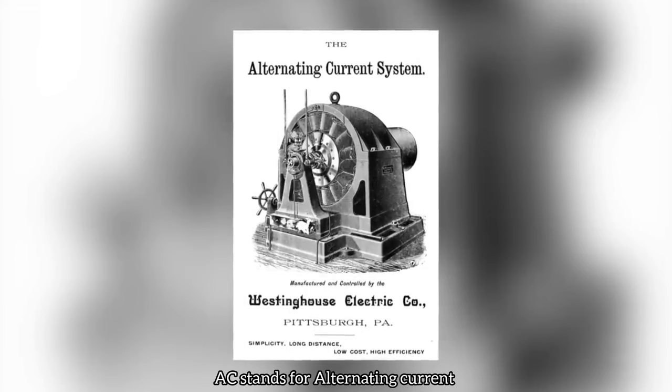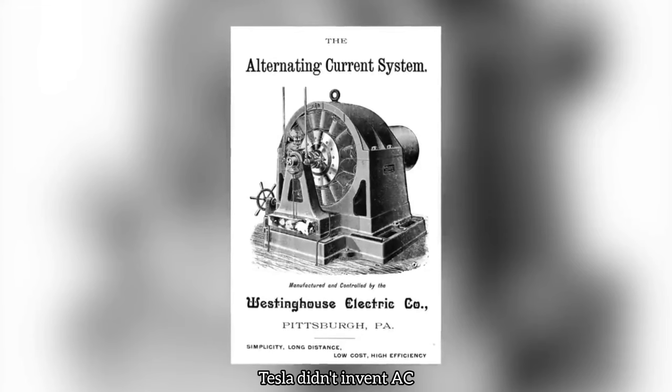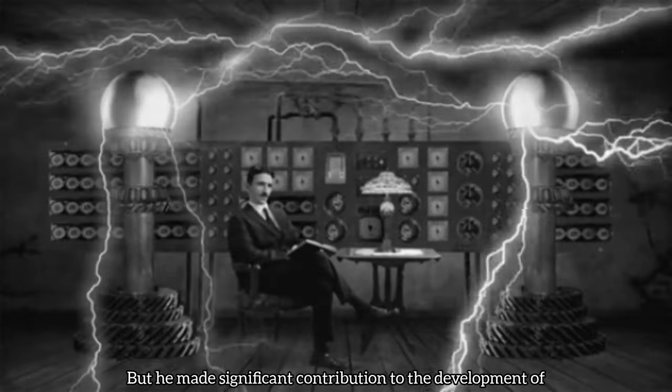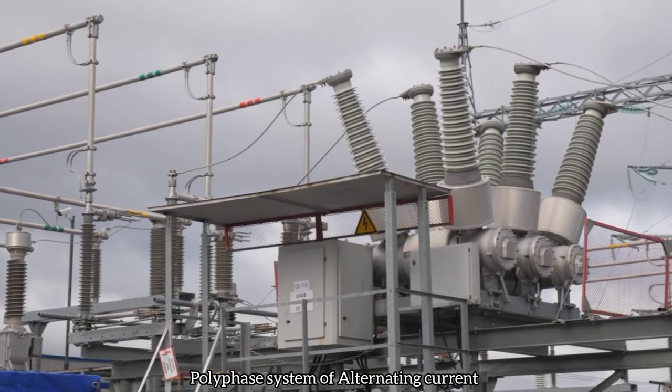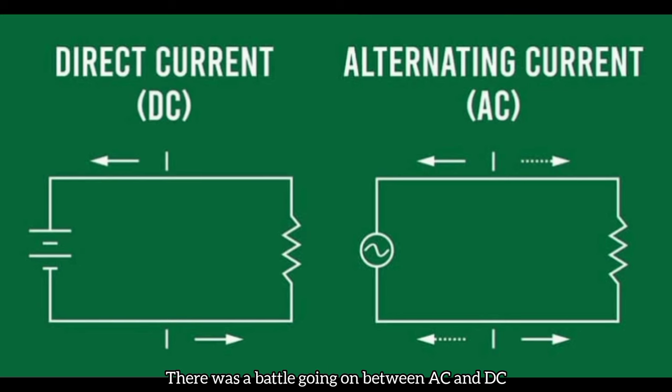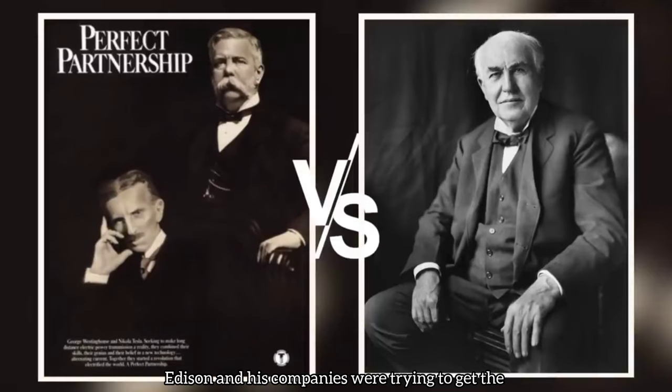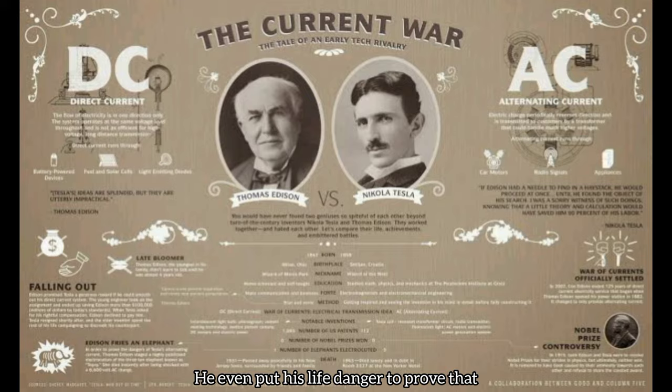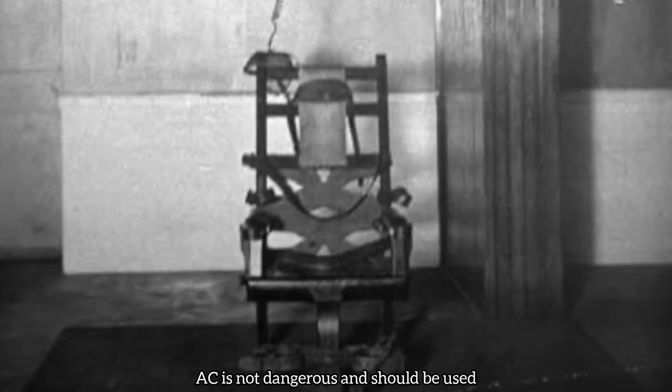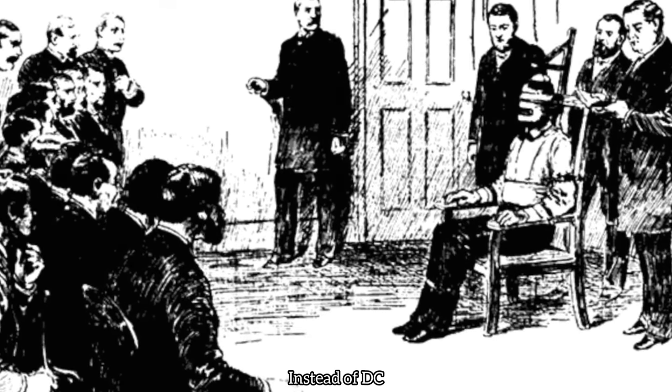AC stands for Alternating Current. Tesla didn't invent AC, but he made a significant contribution to the development of polyphase system of alternating current. In the end of the 19th century, there was a battle going on between AC and DC. Edison and his companies were trying to get the monopoly of DC transmission system, but Tesla was in favor of alternating current. He even put his life in danger to prove that AC is not dangerous and should be used instead of DC.